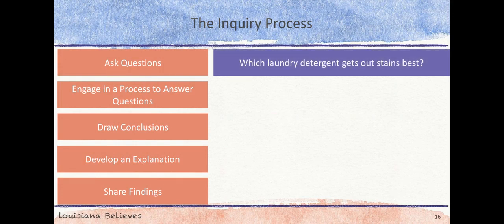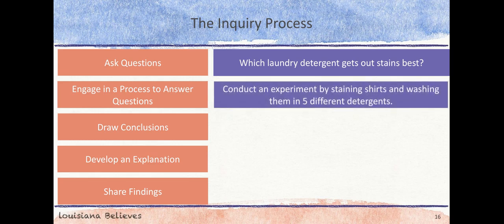Which laundry detergent gets out stains the best? Next, we engage in a process to answer that question by conducting an experiment or by staining shirts and washing them in five different detergents.